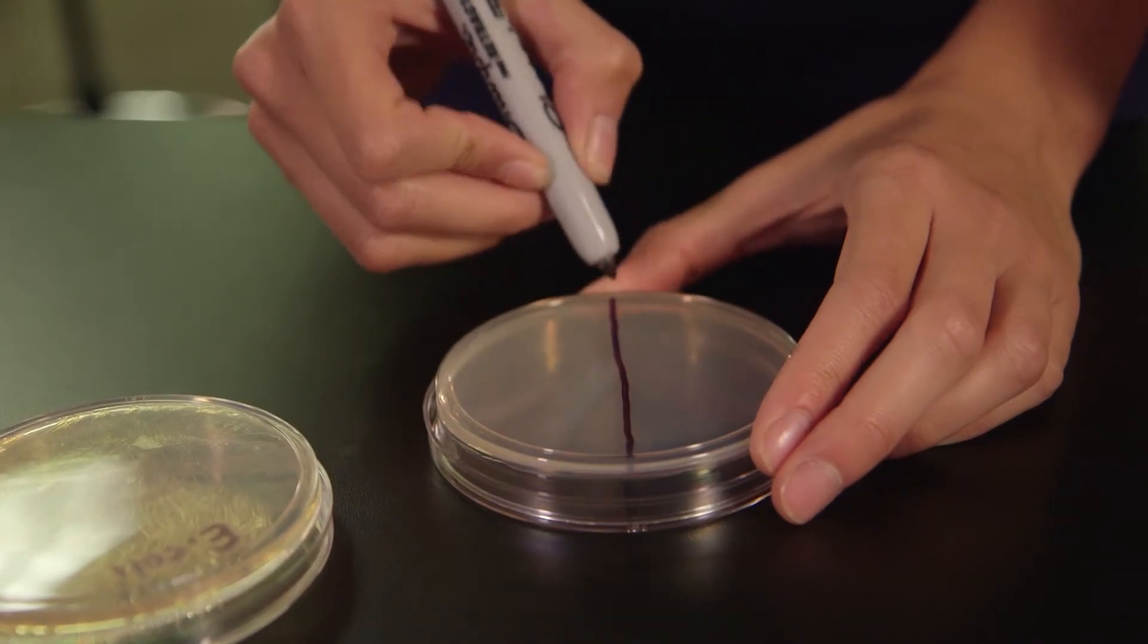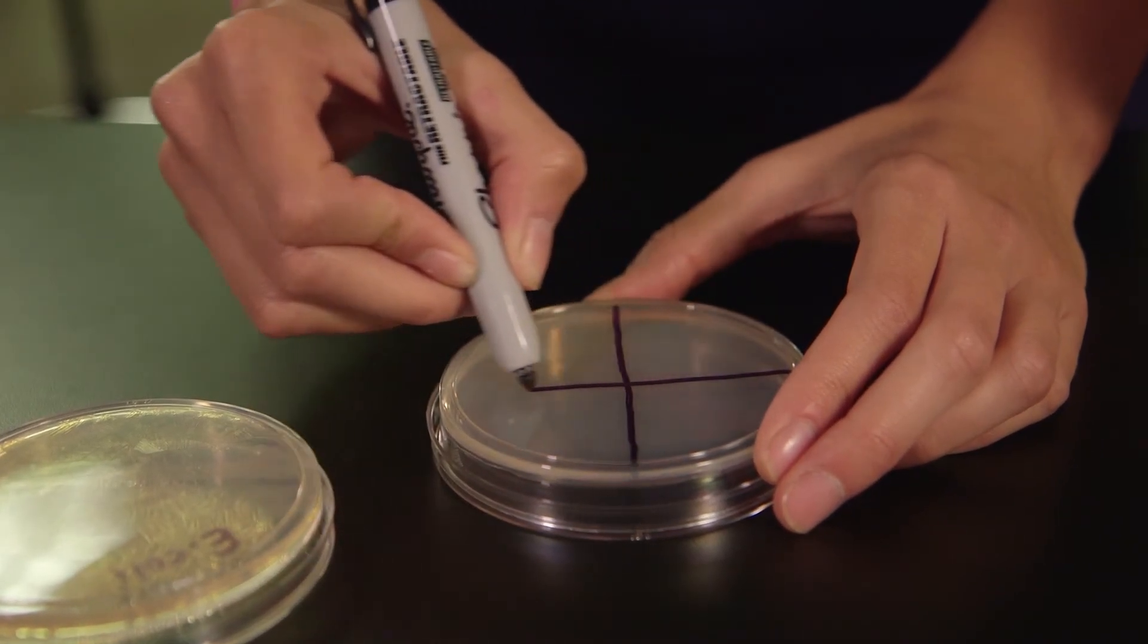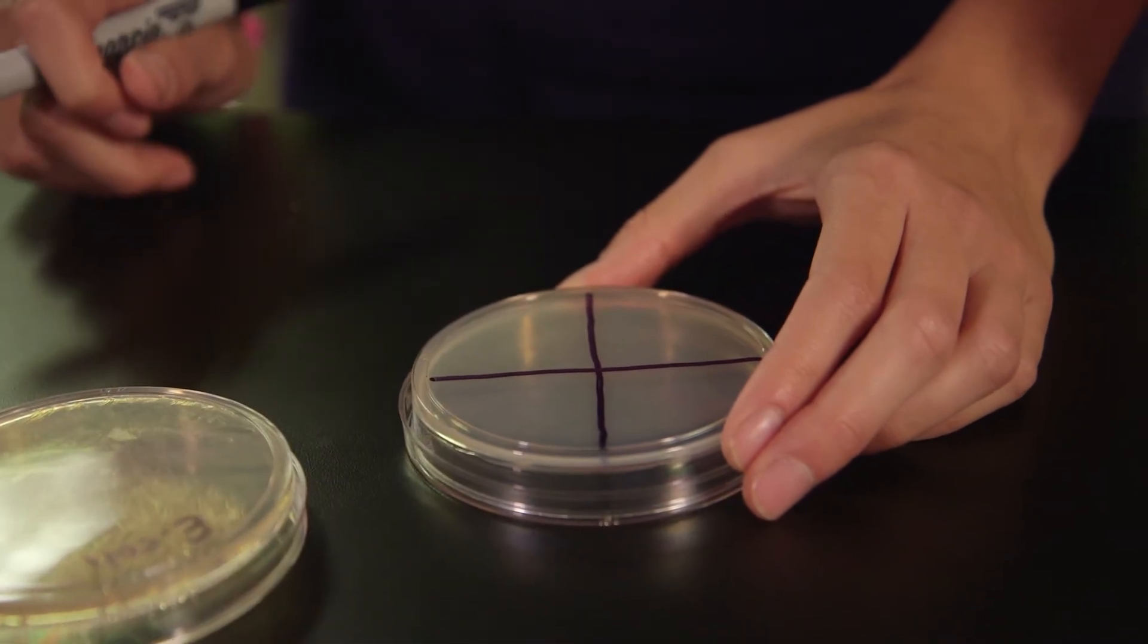Label the outside bottom of the petri dish, the half which contains the agar, with a large X to divide the plate into four quadrants. If you are allergic to any of the antibiotics we are using in this activity, your partner should do the rest of the procedure.